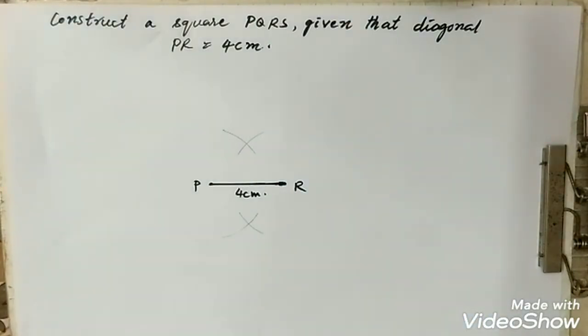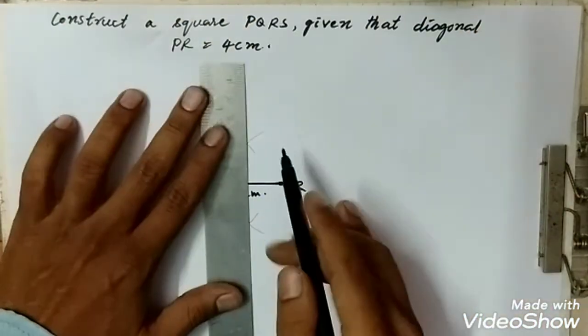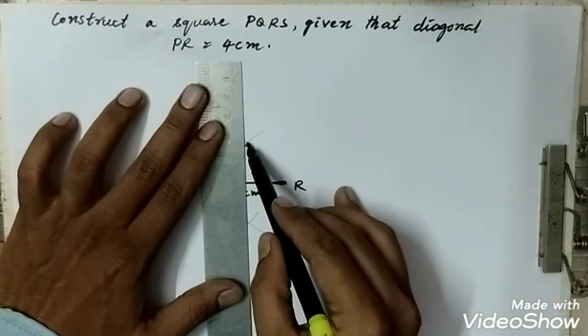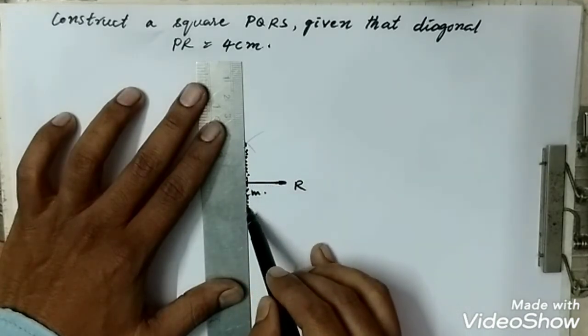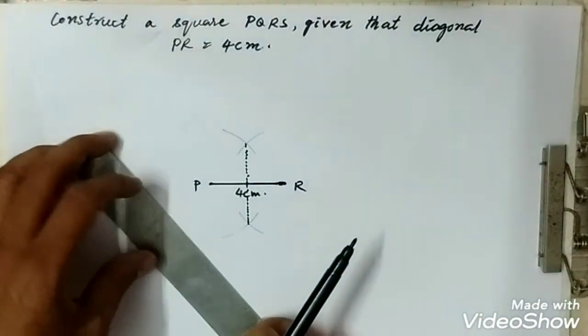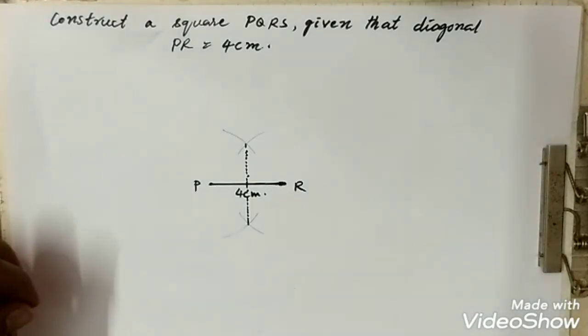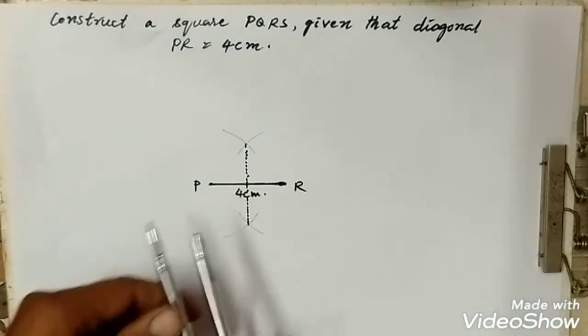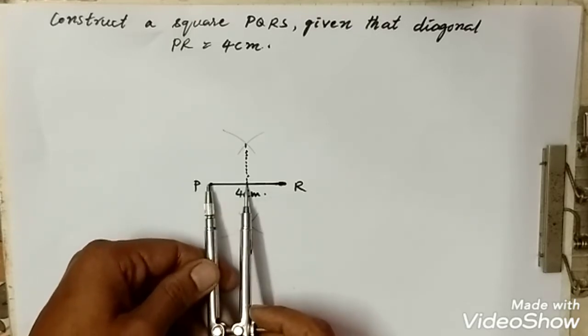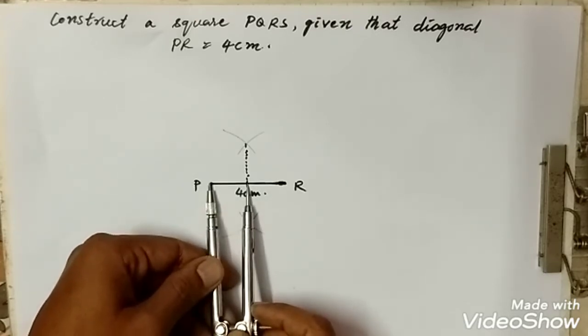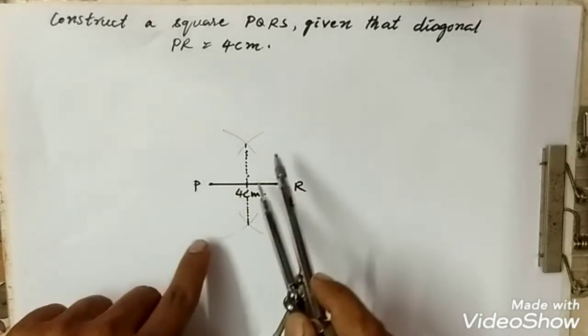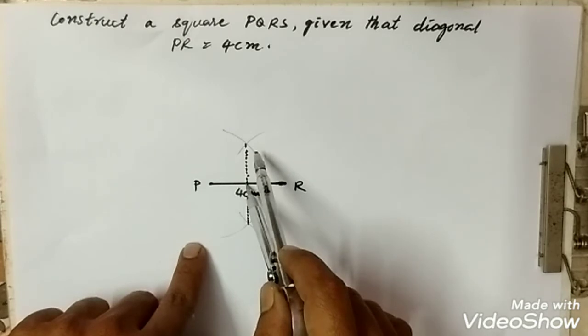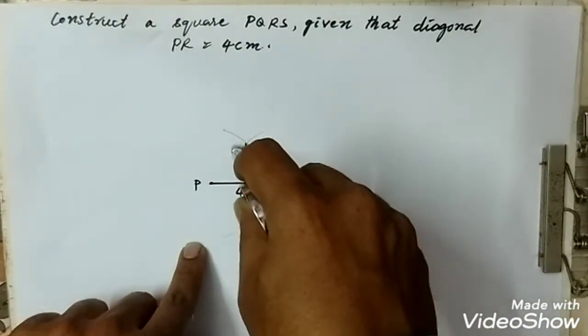Now join these two arcs with the scale such that it is going to cut from the center. Then afterwards, take the measurement of this arc from the midpoint, then draw an arc which cuts the perpendicular line from top and the bottom.